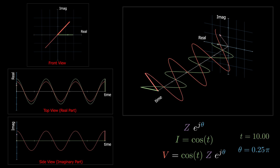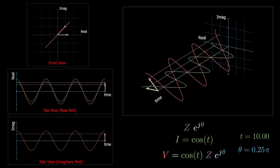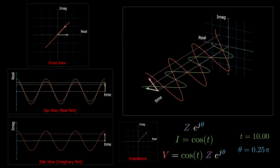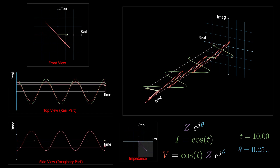The voltage and current can also be represented by their average or RMS values. The impedance phase angle determines the angle between the voltage and current — both instantaneous and average. When the impedance is inductive, the phase angle is positive (first quadrant) and the voltage leads the current by theta degrees. When the impedance is capacitive, the phase angle is negative (fourth quadrant) and the voltage lags the current by theta degrees.